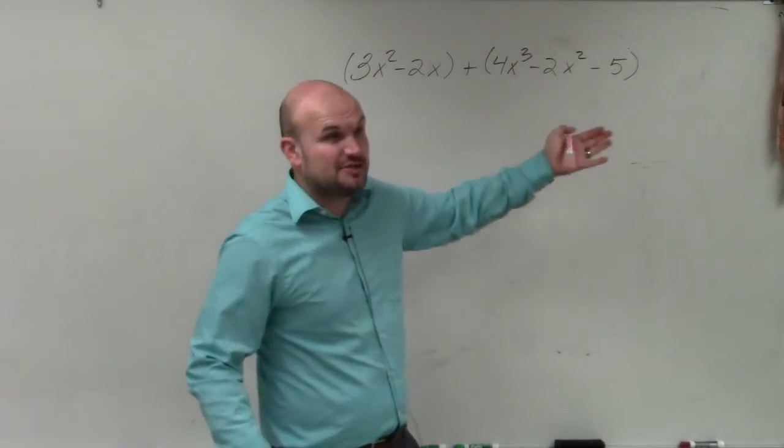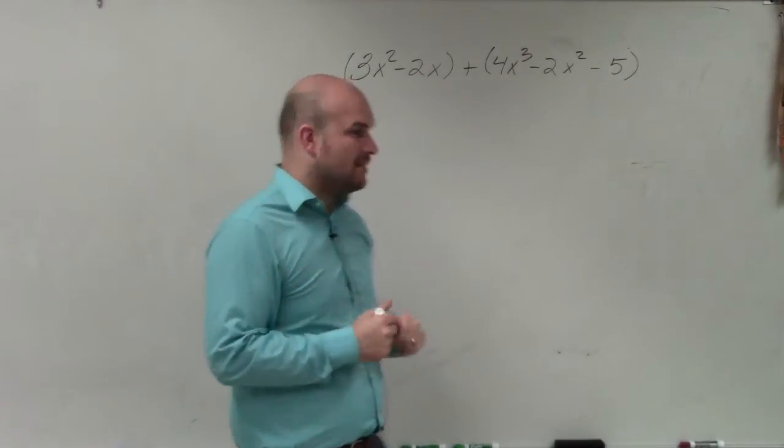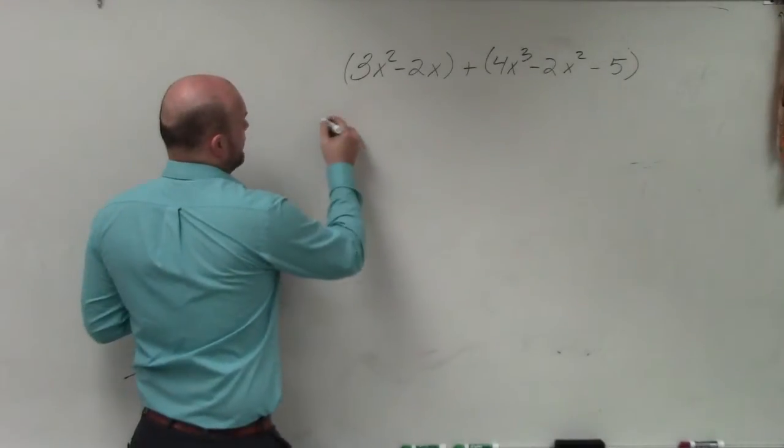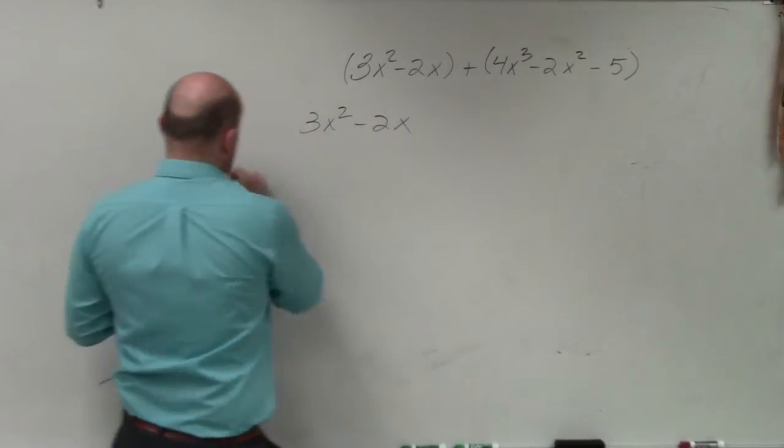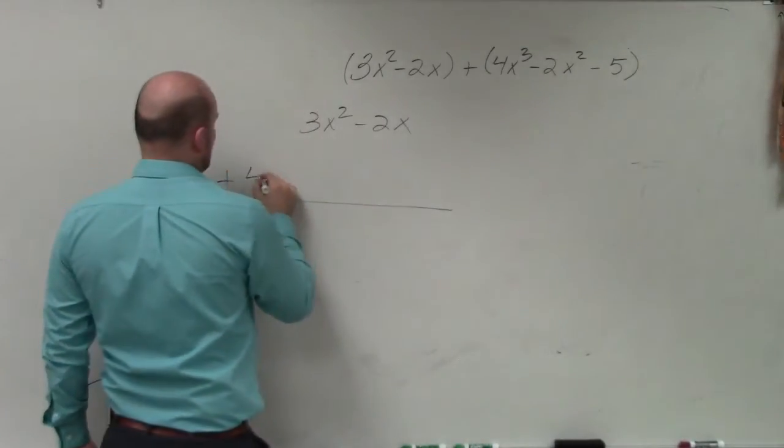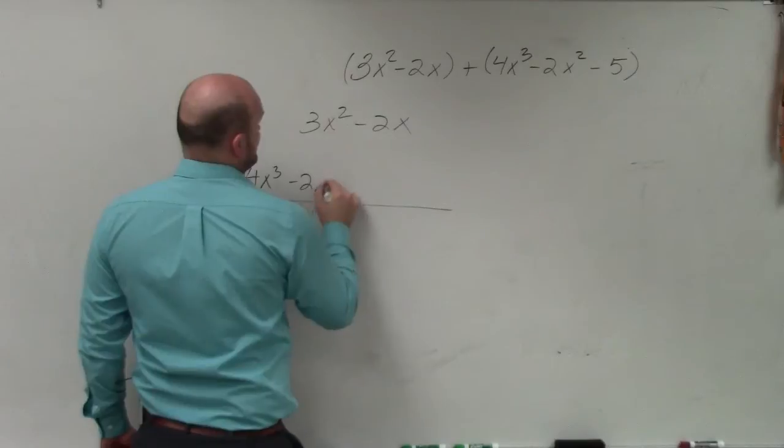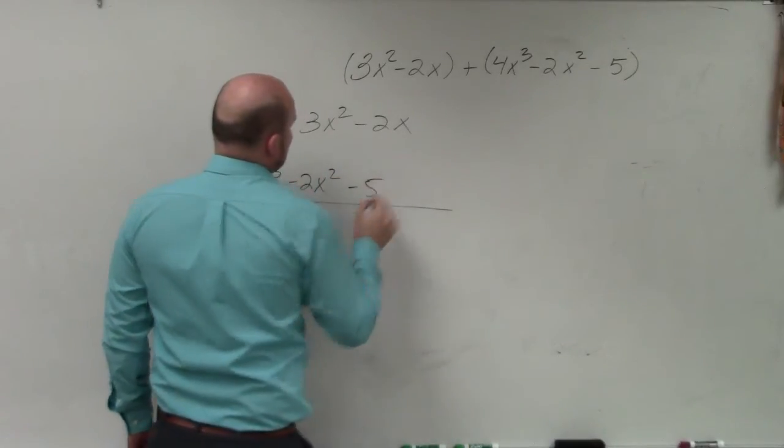Basically, we're rewriting this addition problem as a vertical math problem, where we take one polynomial, 3x² minus 2x, and combine it to another one below it, 4x³ minus 2x² minus 5.